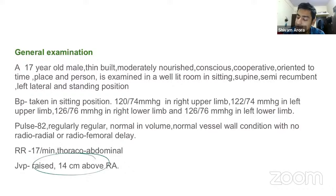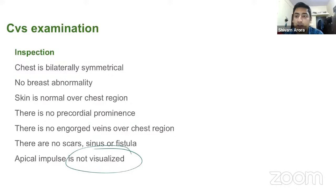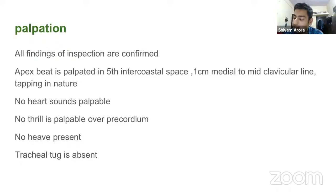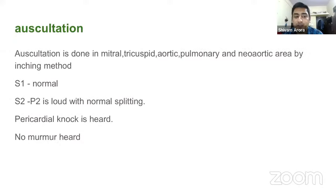On general examination, JVP was raised at 14 cm of right atrium. On CVS examination, the apical impulse is not visualized. On palpation, the apex beat is palpated in normal position. On auscultation, normal S1 is heard; the P2 component is loud with normal splitting, and a pericardial knock is heard in the diastolic phase. No murmur is heard.